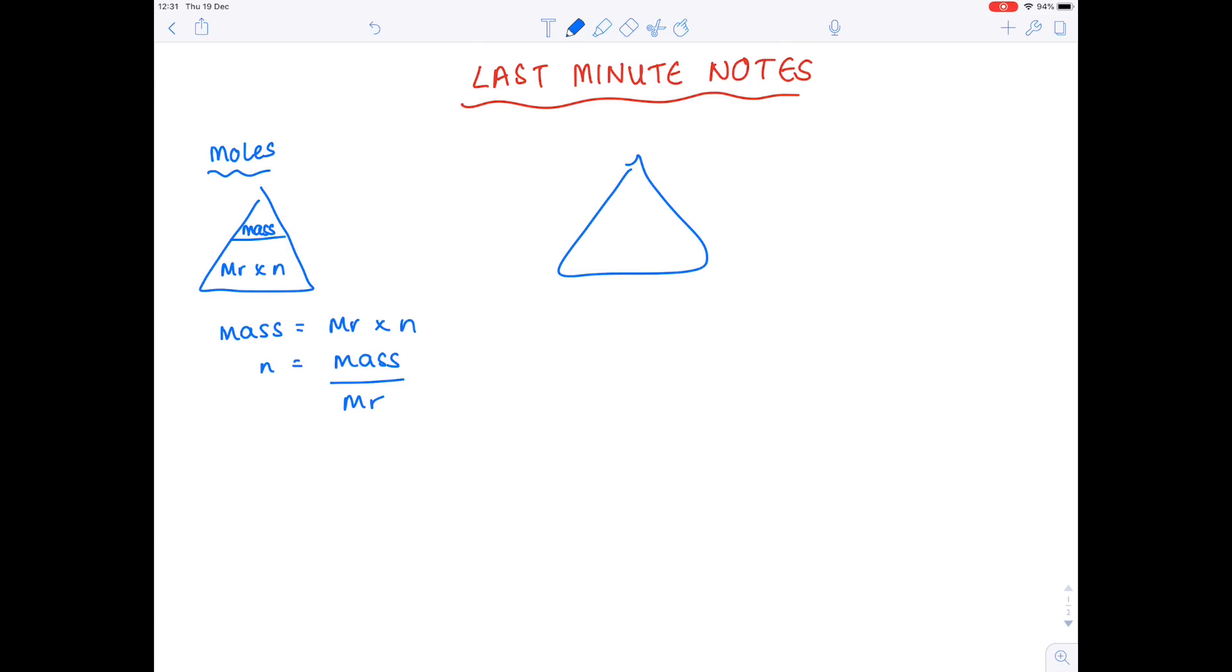There's a second triangle which you can use for titration calculations which states that number of moles is concentration times volume. Concentration is number of moles divided by volume and volume is number of moles divided by concentration. Remember that that volume must be in decimeters cubed and if you're given your question centimeters cubed you must convert it to decimeters cubed when you do your question and in order to do that you have to divide by a thousand.